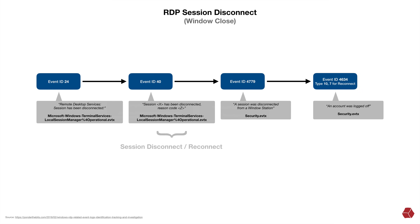Next, we have an RDP session disconnect where someone simply closes the window. There are four event IDs of interest: event ID 24, 'Remote Desktop Services session has been disconnected,' found in the local operational log; event ID 40, 'Session X has been disconnected, reason code Z,' also in the local operational log; event ID 4779, 'A session was disconnected from a Windows station,' found in the security event log; and event ID 4634 type 10 or 7, 'An account was logged off,' also in the security event log.